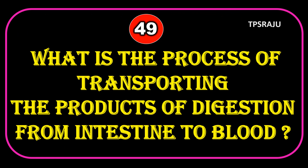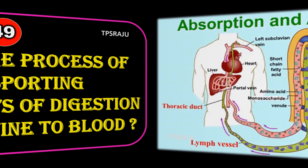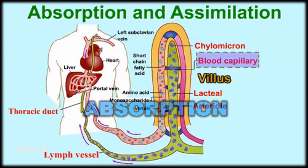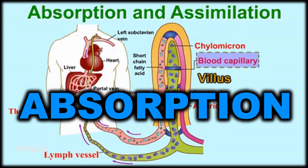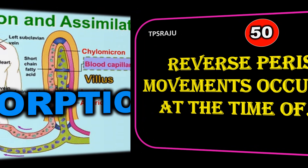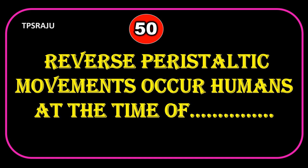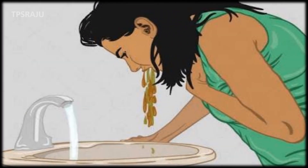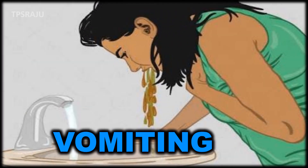What is the process of transporting the products of digestion from the intestine to blood? Absorption. Reverse peristaltic movements occur at the time of vomiting.